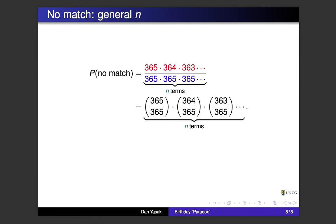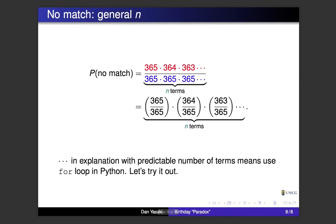For general n, the denominator is 365 multiplied n times, and the numerator goes 365, 364, 363, decreasing by 1 until there are n terms. Regrouping, this becomes (365/365) × (364/365) × ... continuing for n terms. Whenever you have a dot-dot-dot with a predictable number of terms, that means we're going to use a for loop in Python. Let's try it out.